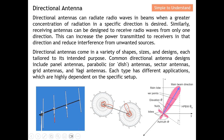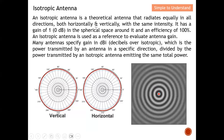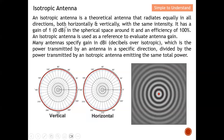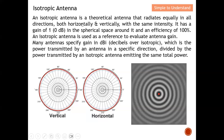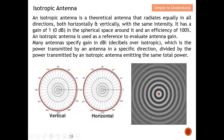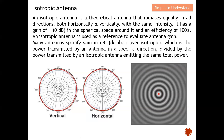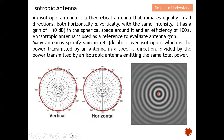An isotropic antenna is a theoretical antenna — it is almost impossible to achieve in practice, making it a purely theoretical concept. It radiates energy equally in all directions, both horizontal and vertical, with the same intensity. Unlike an omni-directional antenna which releases energy only horizontally, isotropic radiation is very challenging to achieve.